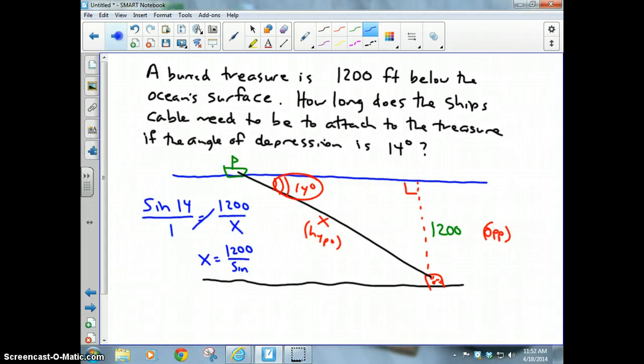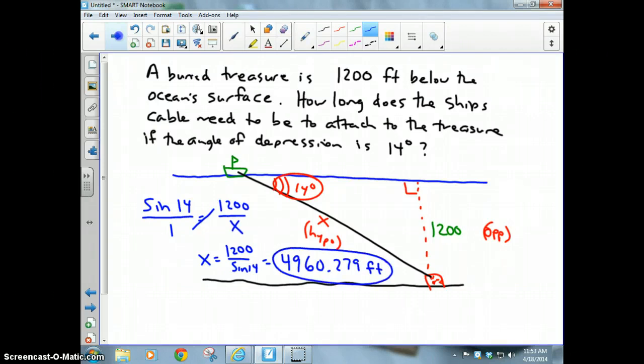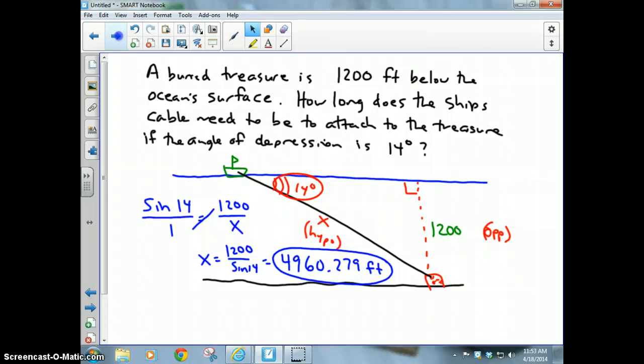1200 divided by sine 14, and what you get is if you type that in your calculator, you find out that the answer is 4960.279 feet, very long cable. And that people is how you use angle of elevation and depression to solve trigonometric real-life examples.